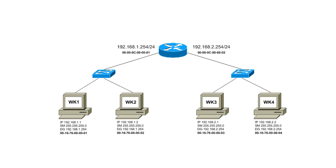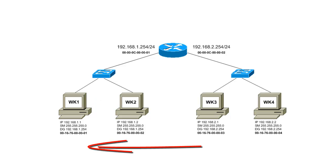We're going to look at two basic examples. We're going to take a look at what happens when Workstation 1 needs to communicate with Workstation 2 on the same subnet, and then we'll look at the example where Workstation 1 needs to communicate with Workstation 3 on the remote subnet.